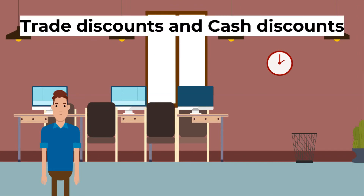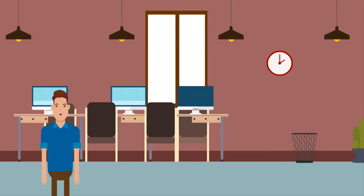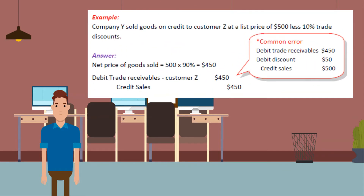Let's go through some examples. First, trade discounts and cash discounts. Trade discounts are discounts given to encourage customers to buy in bulk — there is no double entry for trade discounts. Example: Company Y sold goods on credit to customer Z at a list price of $500 less 10% trade discount. The net price equals $500 × 90% = $450. We record this as: debit trade receivables (customer Z) $450, credit sales $450.